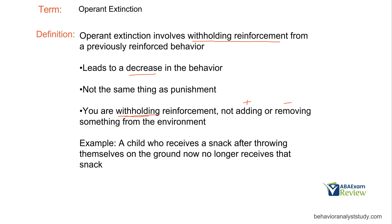For example, a child who receives a snack after throwing themselves on the ground. The behavior is throwing yourself on the ground; the consequence is the child receives a snack. The reinforcer here is that snack. To use operant extinction, if the child throws themselves on the ground, we don't give a snack. We're not adding anything, we're not taking anything away. We're just withholding the snack for throwing themselves on the ground.